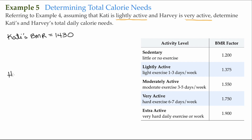For Harvey, his BMR — we'll round his as well. His was around 2,115 calories. And of course, that's the minimum amount of calories he needs to sustain his weight while he's inactive.